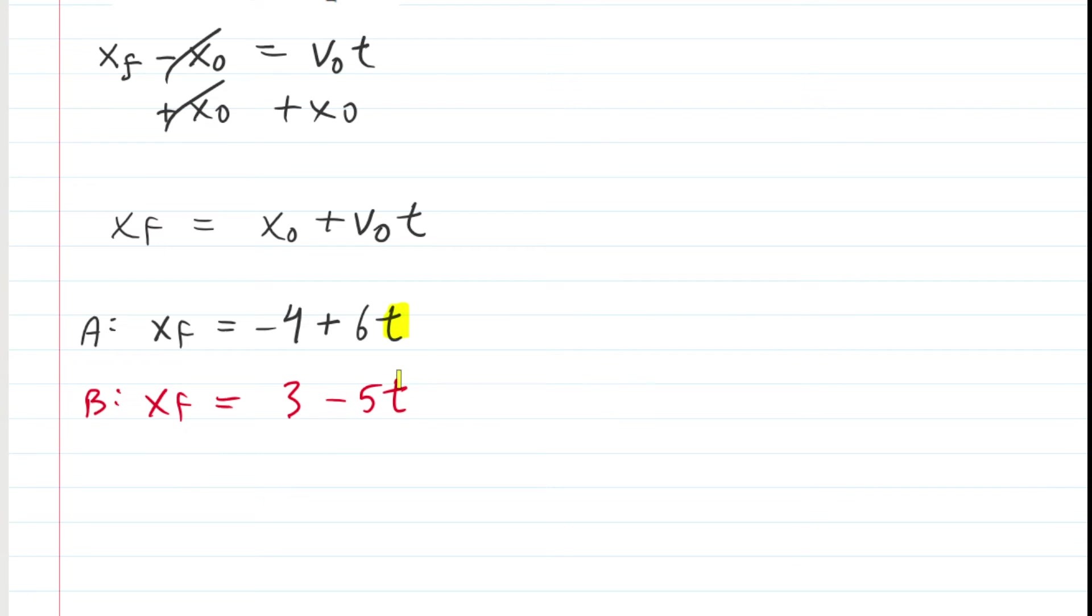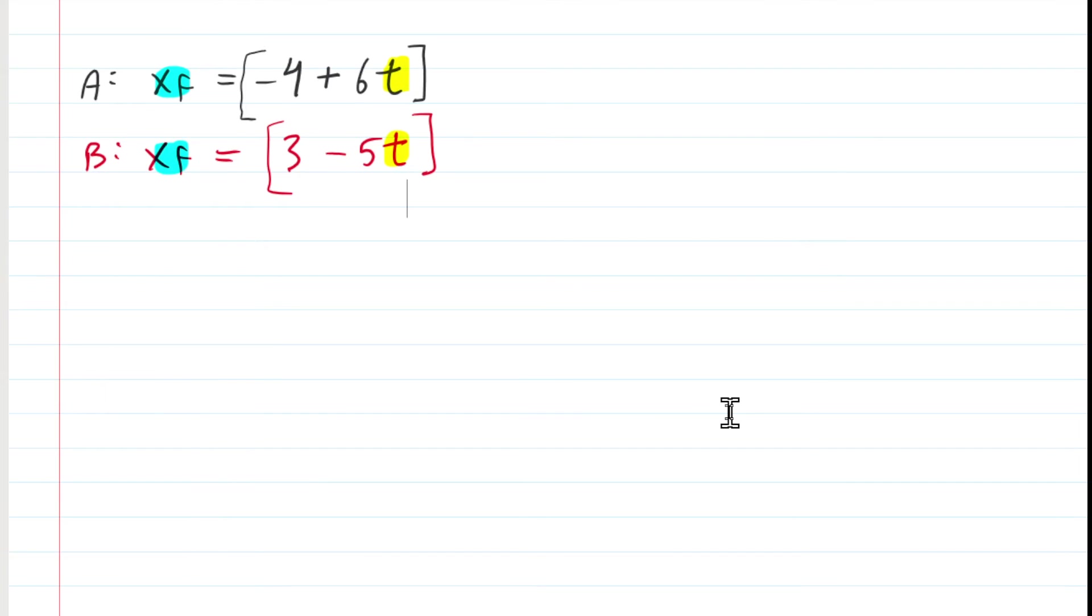However long runner A travels will be the same amount of time that runner B travels. In other words, these times are going to be equal to each other. So we don't have to say time with a subscript A and time with a subscript B. We're just going to use the general label time because it's the same for both runners. In addition, because they're meeting, their final x coordinates are also going to be equal. They're joining together, kind of passing each other. At that moment that they pass each other, they are at the same location on the x axis. So we take the expression for x-final of runner A and the expression for x-final of runner B, and we set them equal to each other.